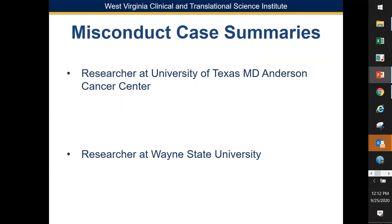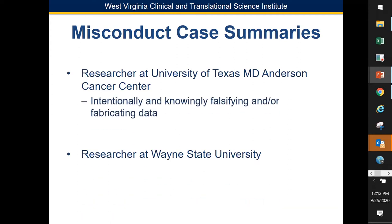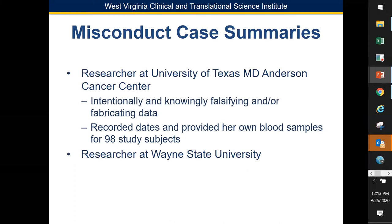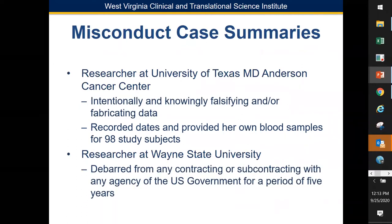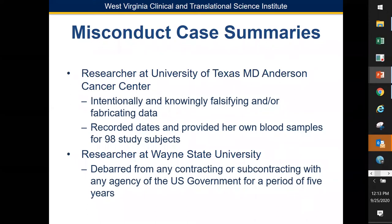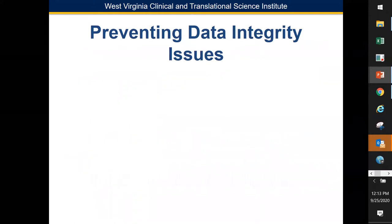Here are some misconduct case summaries. A researcher at University of Texas, MD Anderson Cancer Center, intentionally and knowingly falsified or fabricated data — recording dates and providing her own blood samples for 98 study subjects. A researcher at Wayne State University was actually debarred from contracting with the U.S. government for five years, having caused or permitted 23 instances of research misconduct across three grant applications, two articles, and two posters.